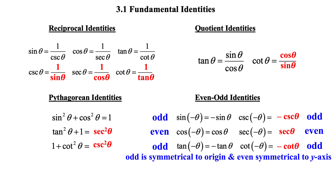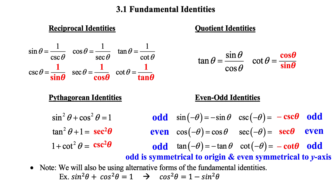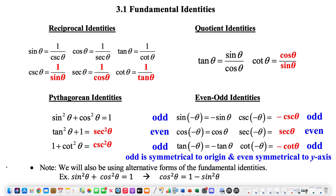Odd identities are symmetrical to the origin, which means if you turn the paper 180 degrees, the graph still looks the same. The even ones flip over the y-axis. We may be using alternate forms of your Pythagorean identities. So remember, sine squared theta plus cosine squared theta equals 1. You could also subtract over the sine squared theta to the 1, or subtract over the cosine squared. All those alternate forms are possible, so please keep those in mind.